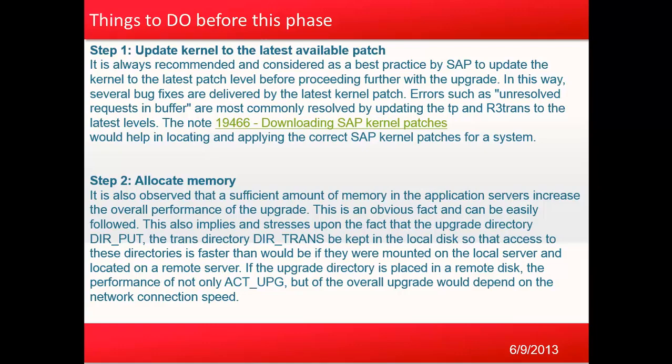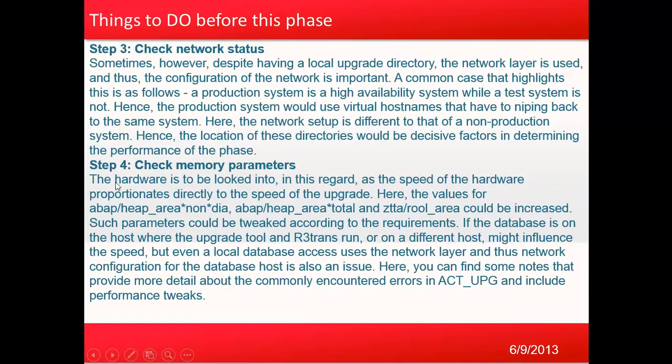Errors such as unresolved requests in the buffer are most commonly resolved by updating the kernel to the latest level. Next, allocate sufficient memory. It is observed that sufficient memory in the application servers increases the overall performance of the upgrade. Also, the upgrade directory and the trans directory should be kept on local disk so that access to these directories is faster, since massive read/write operations take place during this phase. If the upgrade directory is placed on a remote disk, you will see performance degradation.